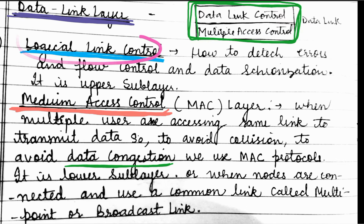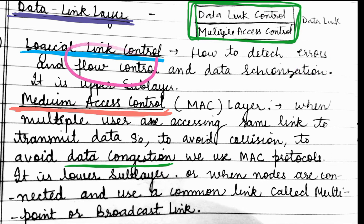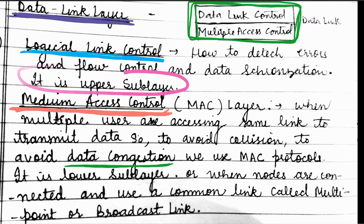The work of the logical link control layer is finding out errors. It also handles flow control — whether we have to send a message quickly or slowly, and ensuring we don't have a collision. So all the tasks related to forwarding data are the work of the logical link layer.